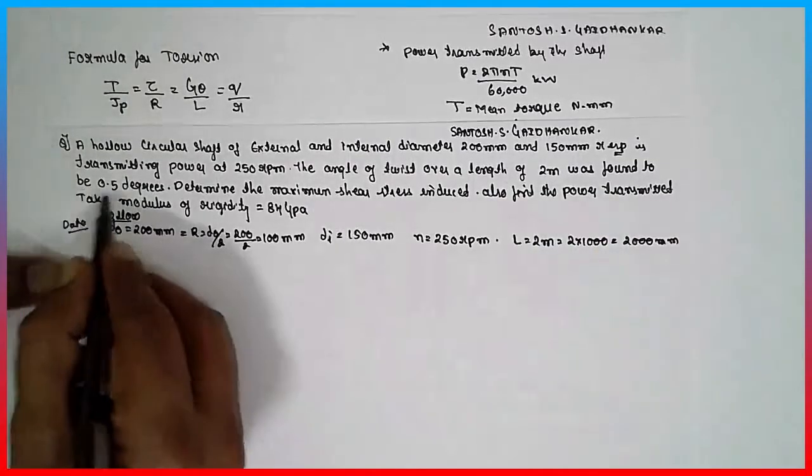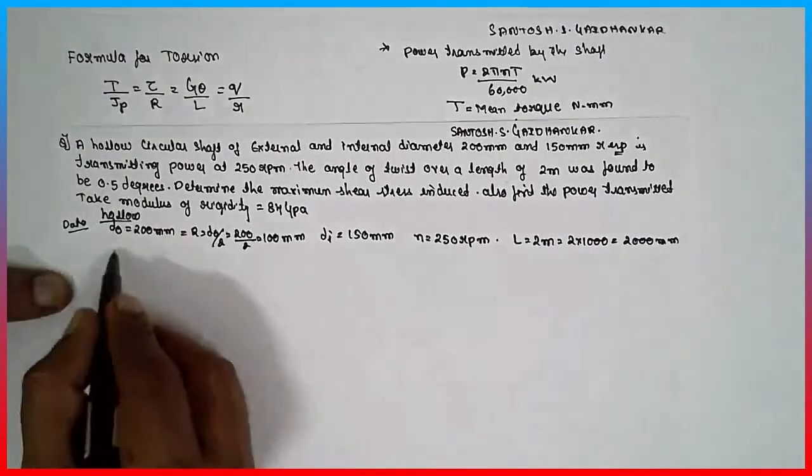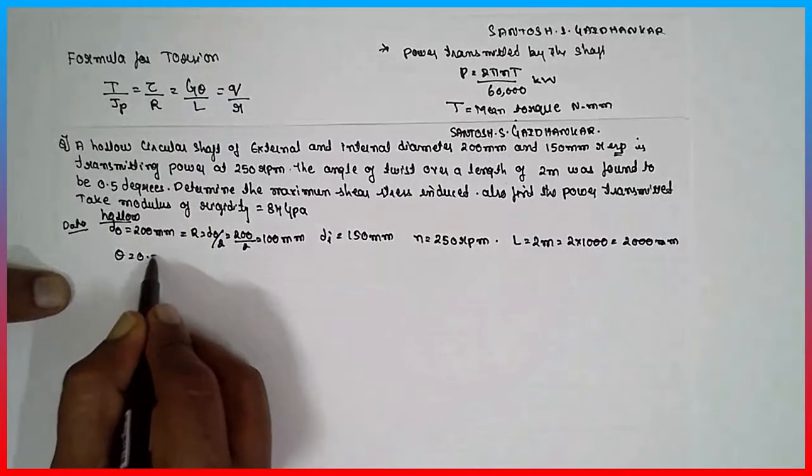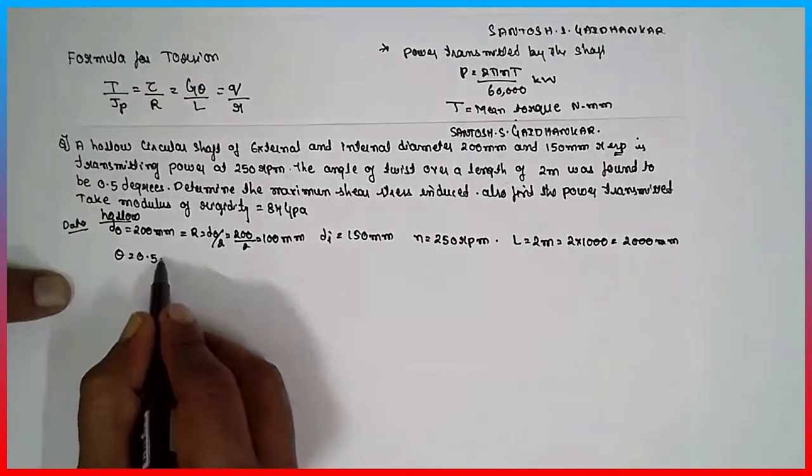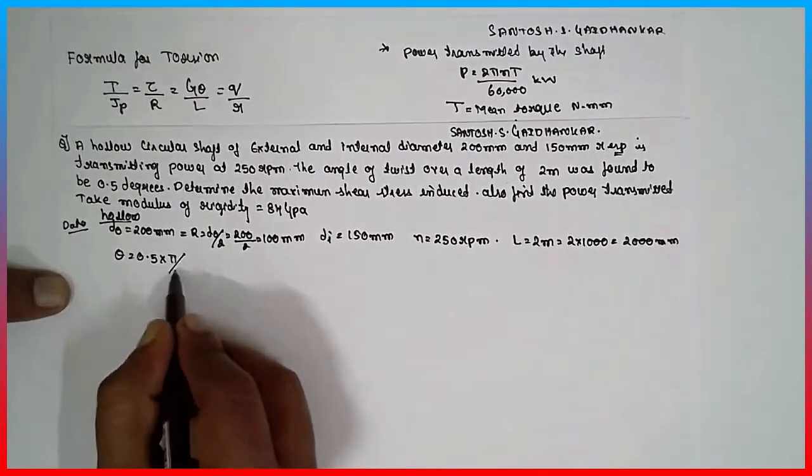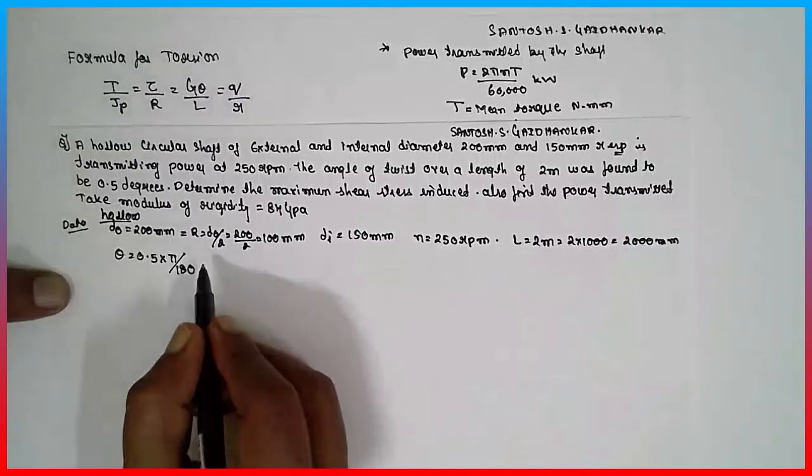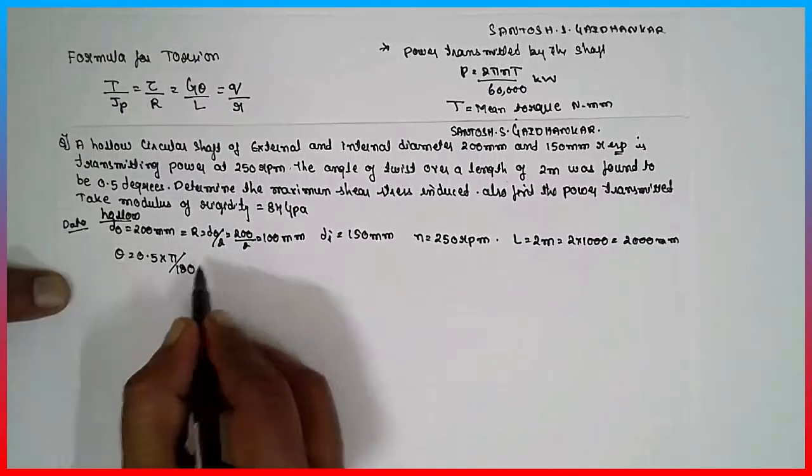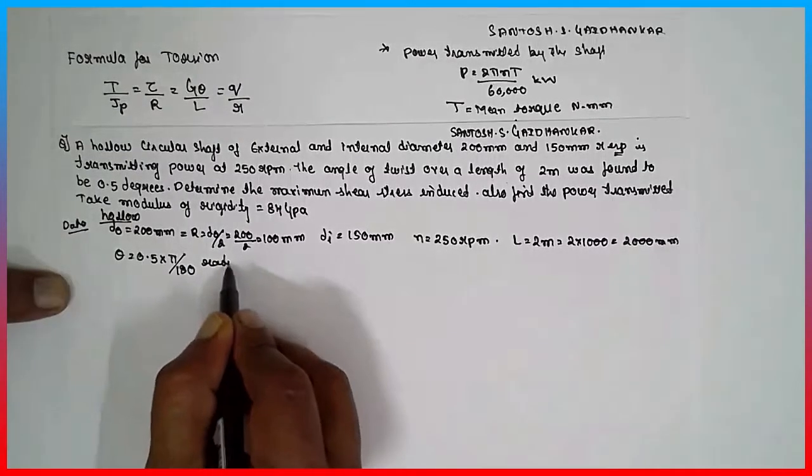Was found to be 0.5 degree. Theta is given 0.5 degree, has to be converted in terms of radian. It is multiplied by pi divided by 180. Pi divided by 180, you will get in terms of radian.